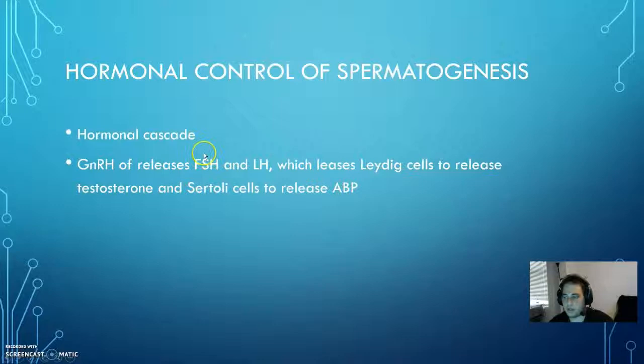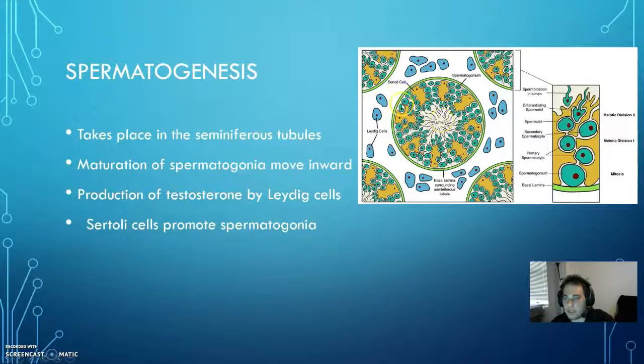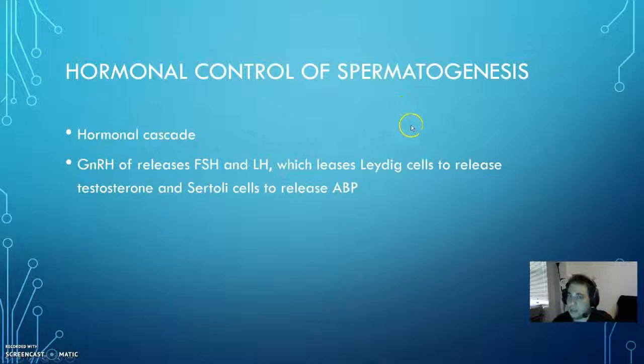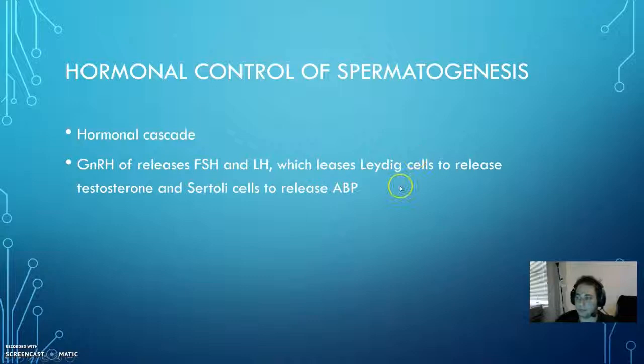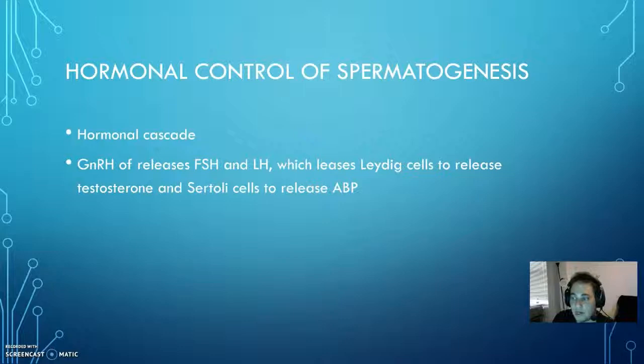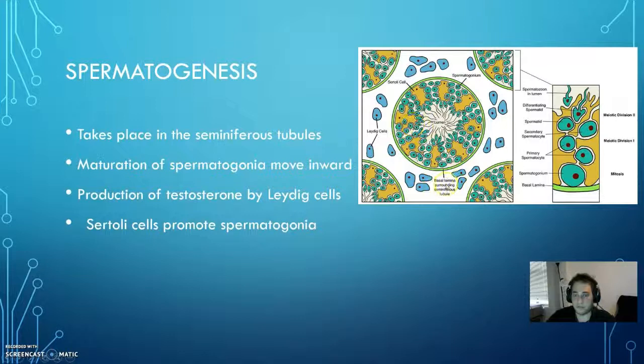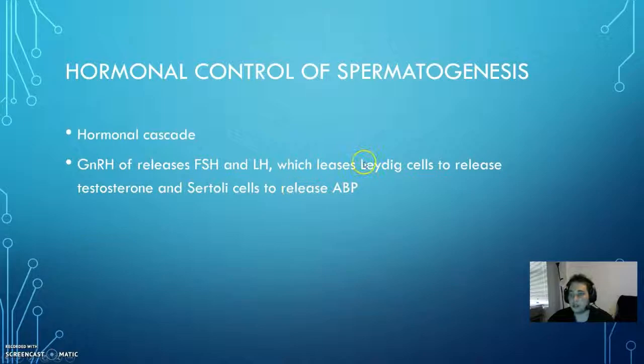For hormonal control of spermatogenesis — for all of this to actually be occurring, for Leydig cells to produce testosterone and for the Sertoli cells to produce ABP hormone — this all has to be initiated by the hypothalamic-pituitary-gonadal axis, which is a hormonal cascade. This begins in the hypothalamus, which releases GnRH, and that GnRH then travels down to the anterior pituitary, which tells it to release FSH and LH. FSH and LH then travel towards the seminiferous tubules and towards the Leydig and Sertoli cells.